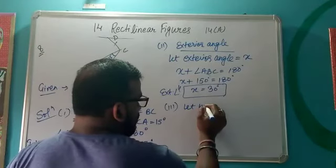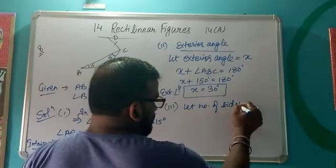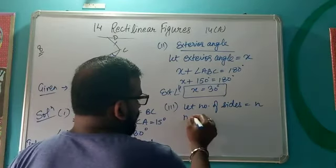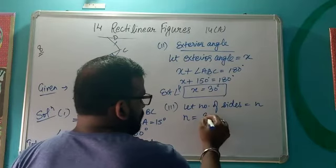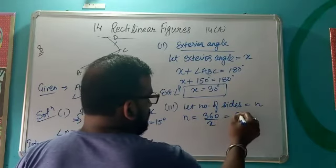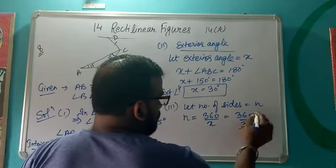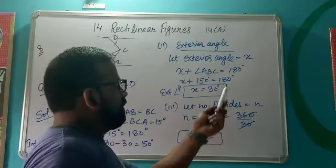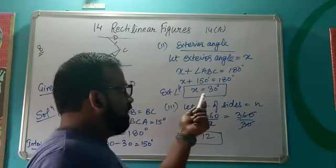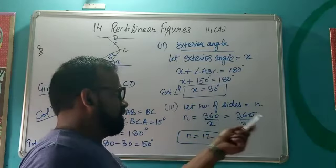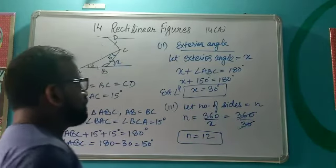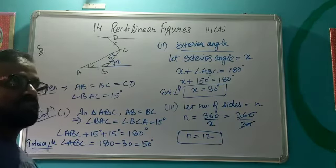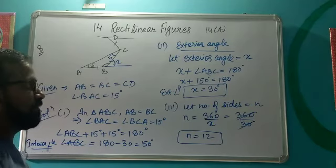Now we find the number of sides. Let number of sides equal n. We know n = 360 ÷ exterior angle = 360 ÷ 30 = 12. The sum of exterior angles is always 360, and each exterior angle is 30 degrees, so n = 12. That's all for today — we discussed question number 8 and will continue after question 8 in the next video.